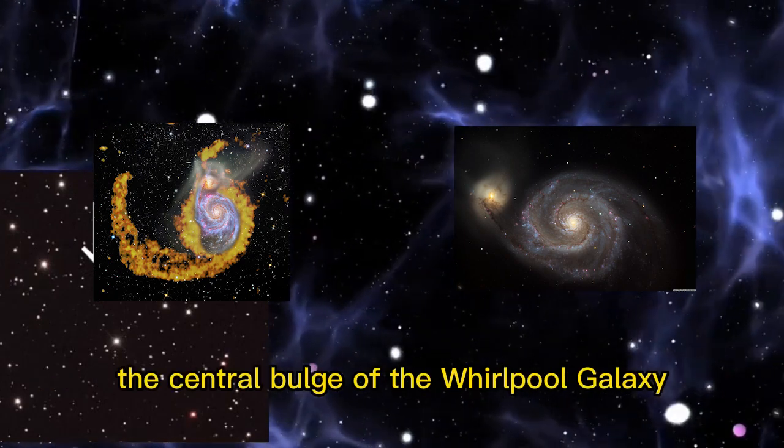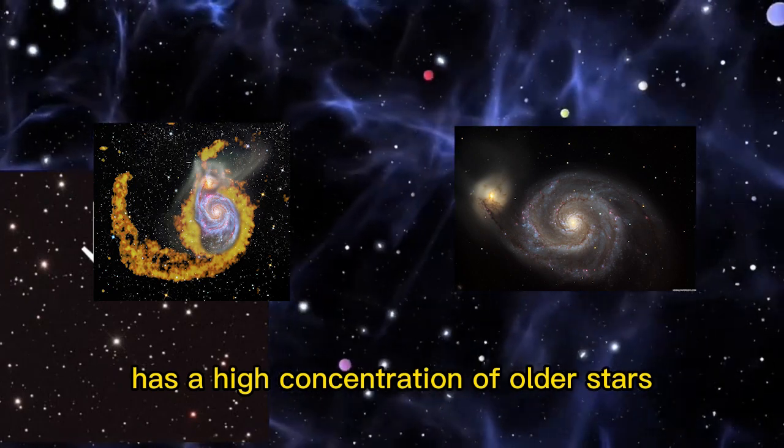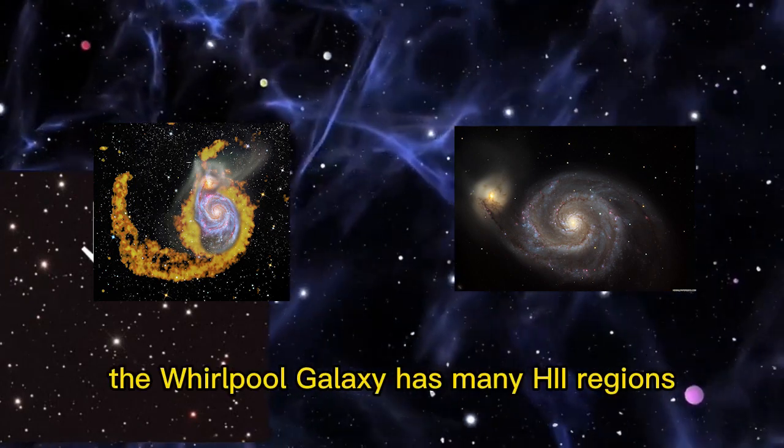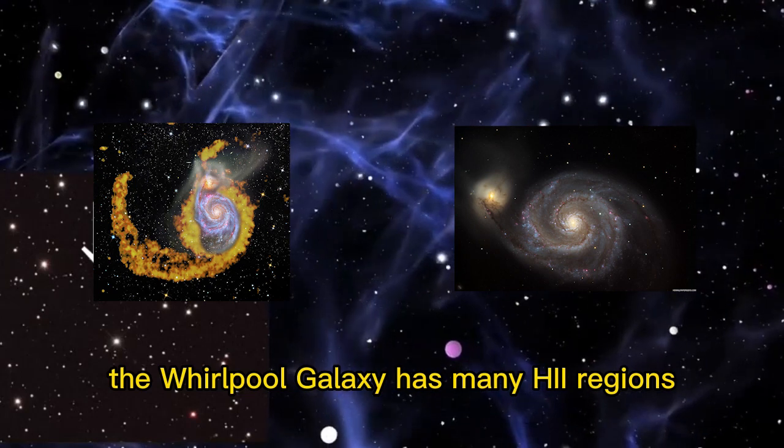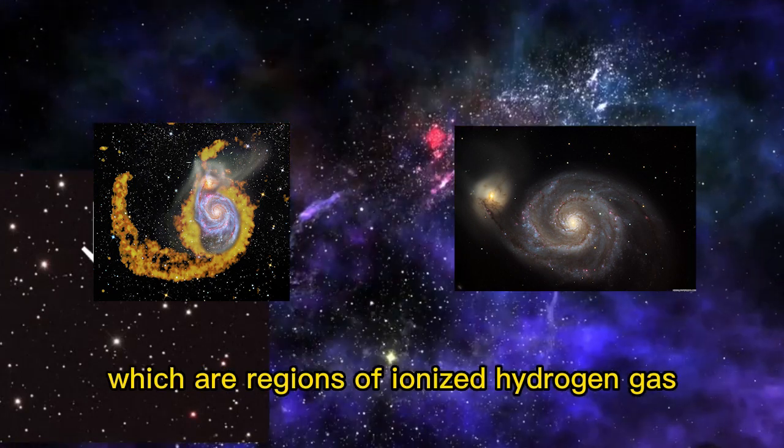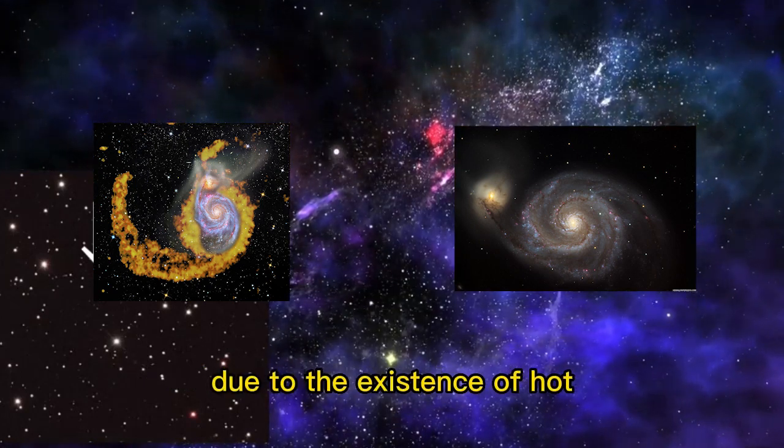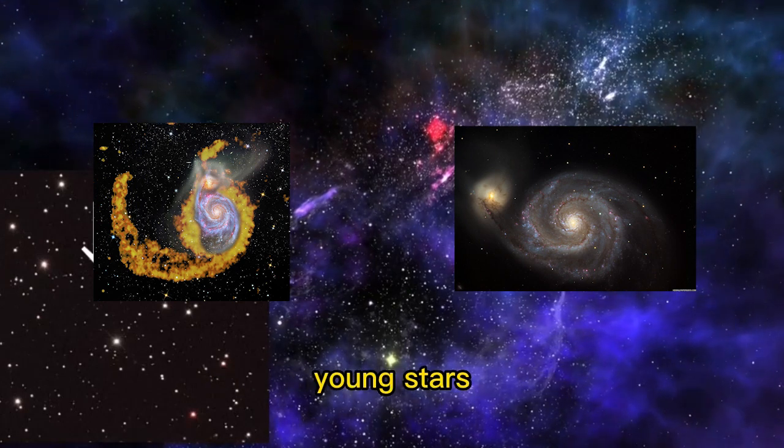The central bulge of the Whirlpool Galaxy has a high concentration of older stars. The galaxy has many HII regions, which are areas of ionized hydrogen gas that emit bright light due to the presence of hot, young stars.